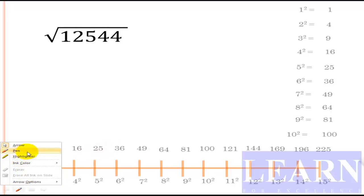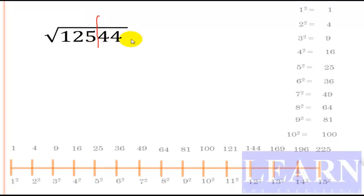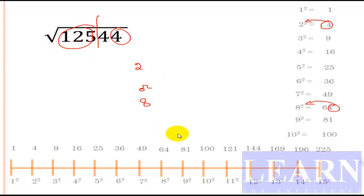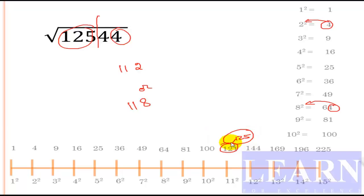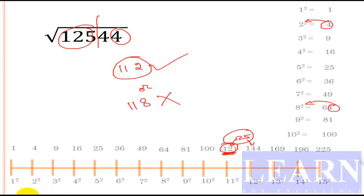The next problem is 12544 — a five-digit number. The number ends with 4, so the square root can end with 2 or 8. The first part is 125, which is greater than 121 (that is 11 squared). Now check: is 125 closer to 121 or 144? It is closer to 121 (the previous square), so we take the smallest number. The answer is 112.